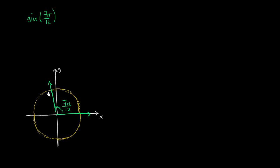The sine of 7π/12, by the unit circle definition of sine, is the y-coordinate of where this ray intersects the unit circle. This is a unit circle — it has radius one. The y-coordinate where it intersects is the sine. Another way to think about it: it's the length of this magenta line right over here.